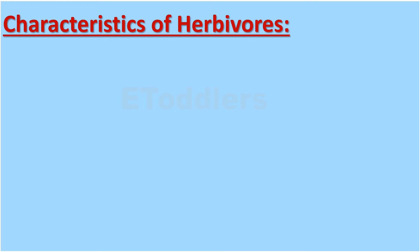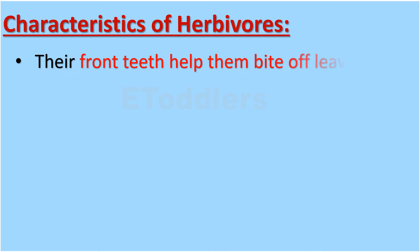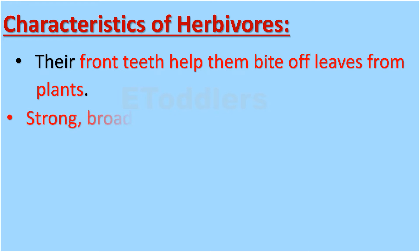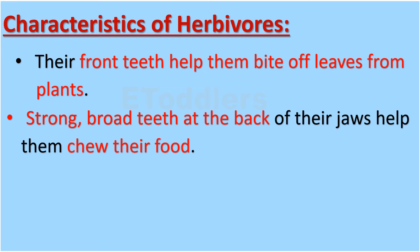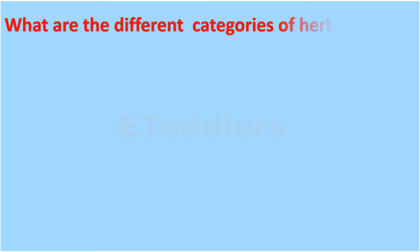Characteristics of herbivores: Their flat teeth help them bite off leaves from plants. Strong, broad teeth at the back of their jaws help them chew their food. What are the different categories of herbivores?